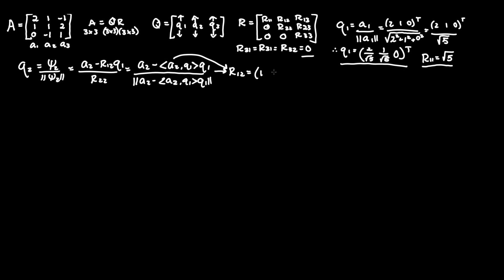We know A2 is (1, 1, -1) transposed, times the inner product with Q1, which we found to be (2 over root 5, 1 over root 5, 0) transposed. Multiplying: 1 times 2 over root 5, plus 1 times 1 over root 5, plus -1 times 0. This equals 2 over root 5 plus 1 over root 5 plus 0, which is 3 over root 5. And remember that this is R12.